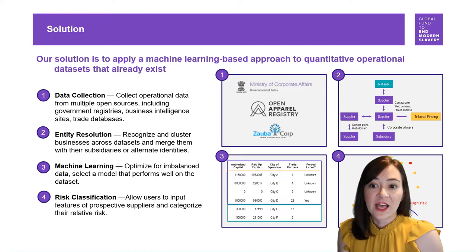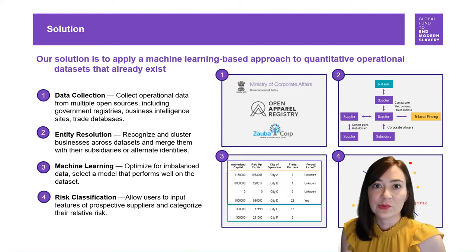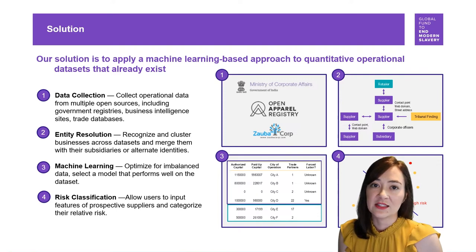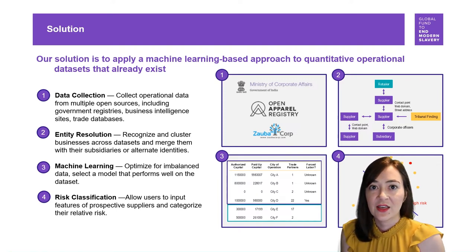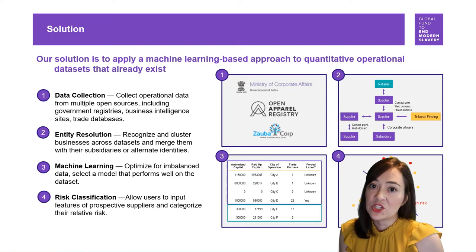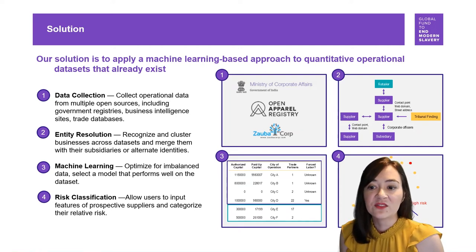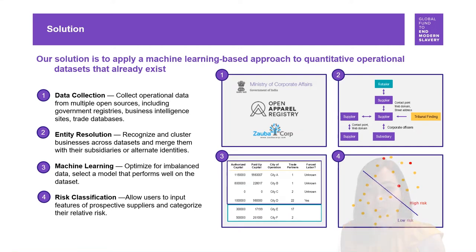We apply an entity resolution algorithm to recognize and cluster businesses across datasets and merge them with their subsidiaries or alternate identities. We applied a machine learning algorithm that's optimized for imbalanced data. And now, any user can input features of a prospective supplier and obtain a risk quantification.